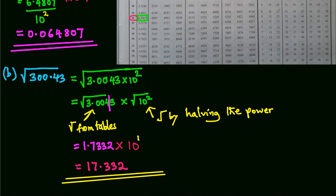In both examples, you can see that we are halving the power, and that's why n has to be even.